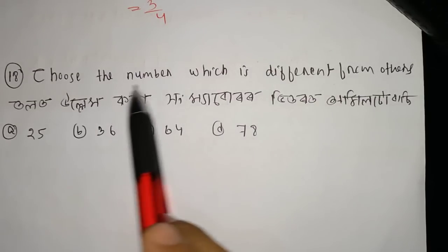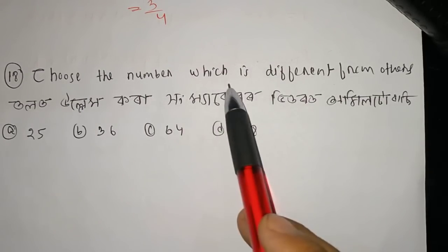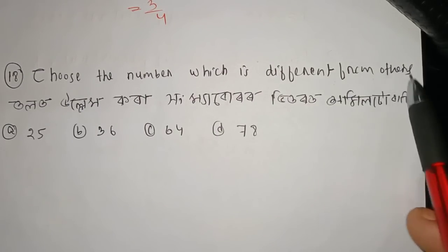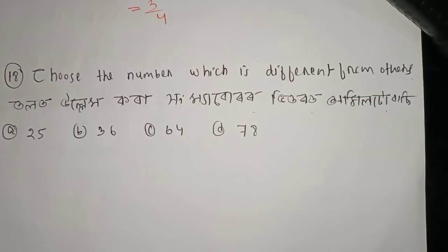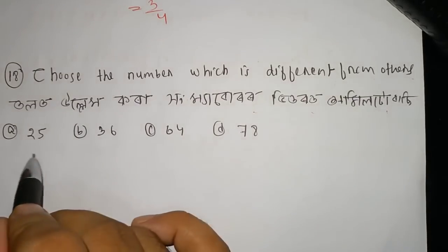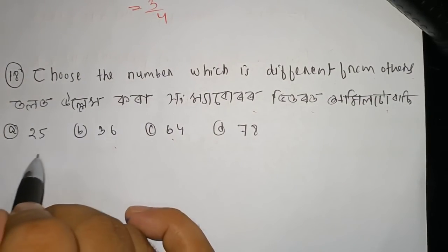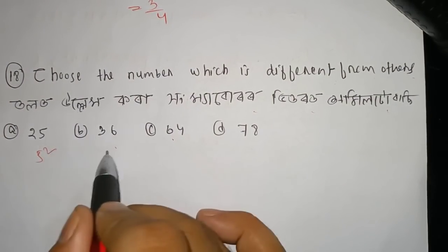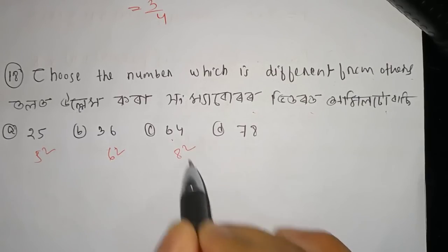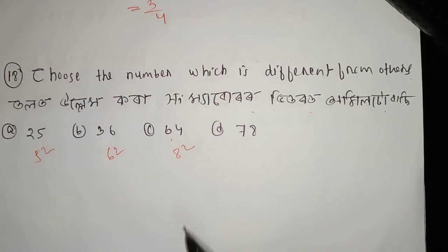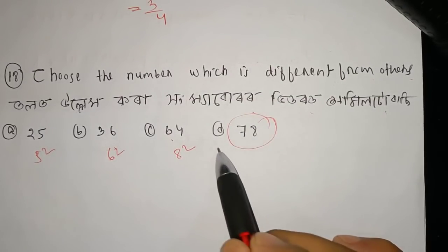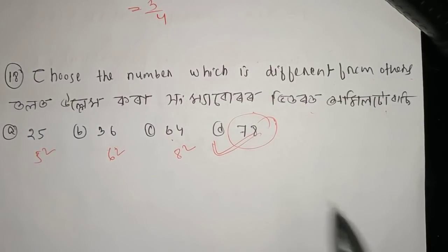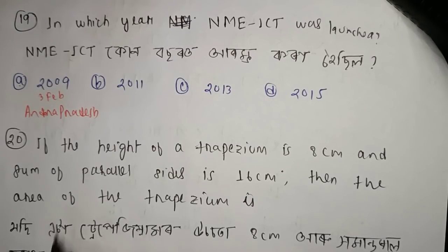Now we have to choose the number which is different from others. The number in question is between 18 and 32. The number has to do 3 by 4, and these are the numbers. That is clear.